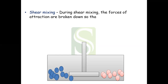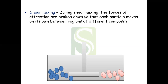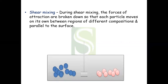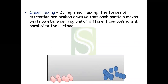The next mechanism is shear mixing. During shear mixing, the forces of attraction are broken down so that each particle will move on its own between regions of different compositions, and also parallel to the surface. Shear is applied and because of that there occurs particle movement — the attraction forces are broken and particles move from one region to another.